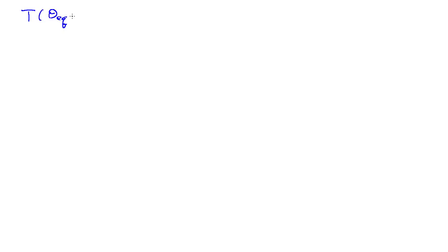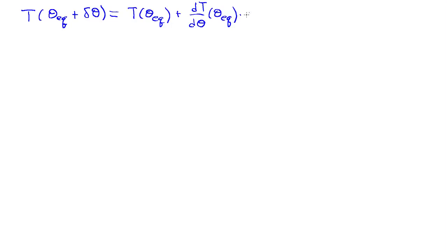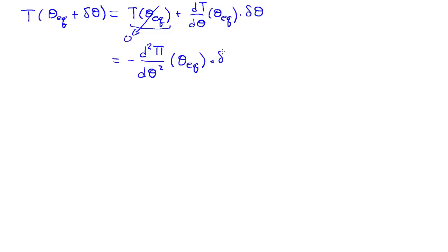In general, the torque at some equilibrium position plus a perturbation can be expanded in a Taylor series: the torque at equilibrium plus the derivative of the torque with respect to theta evaluated at equilibrium, times delta-theta. Retaining just the first two terms, since the torque at equilibrium equals zero and the torque is minus the derivative of the potential, this becomes minus the second derivative of the potential with respect to theta evaluated at the equilibrium, times delta-theta.